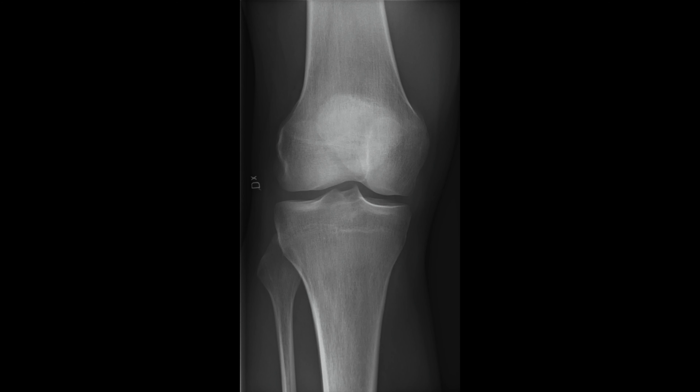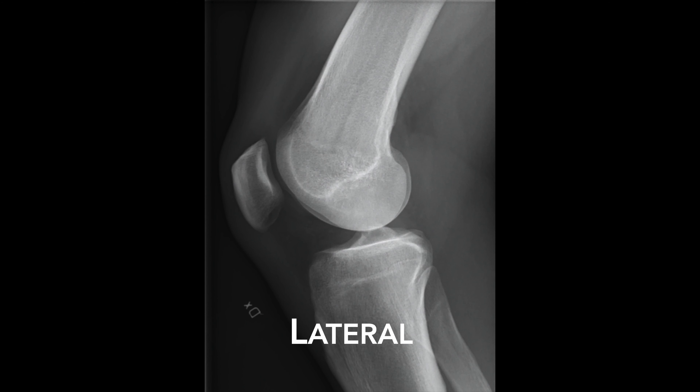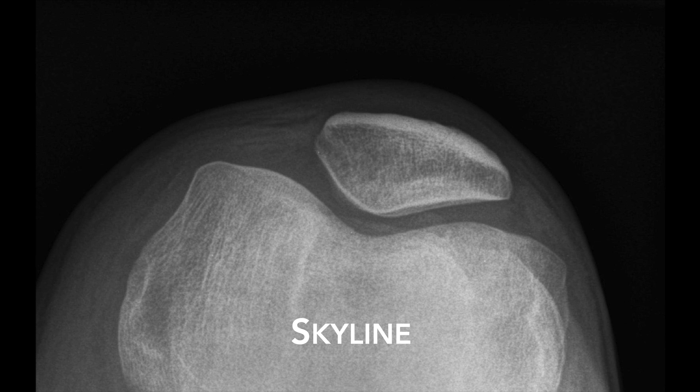You can acquire images in any way you want, however these have been standardized to provide the best possible views. It is important to take at least two views to avoid misinterpretation. The most common knee radiographic positions are anterior-posterior and lateral. If there is suspected patellar fracture but an AP and lateral are not conclusive, a dedicated patellar x-ray called skyline view may be taken.